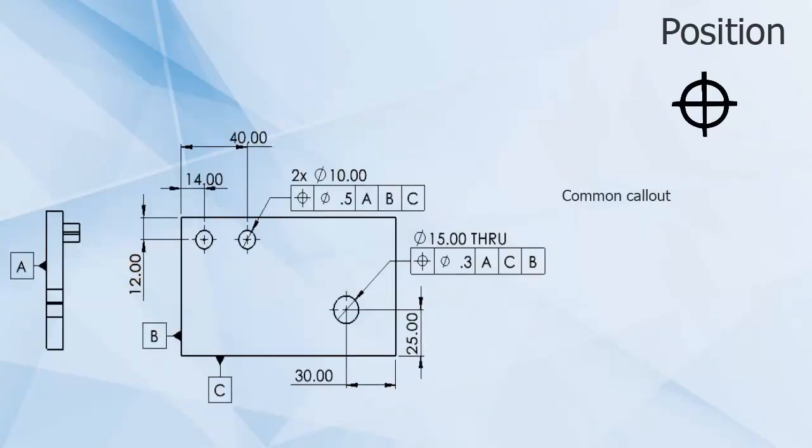Position is one of the most common callouts and is a simple concept. The position control gives the mathematical measurement from a datum to a nominal position, and then defines a tolerance zone around that nominal position.